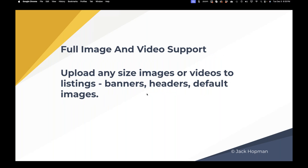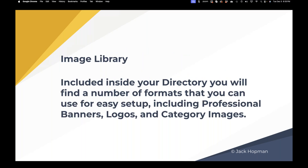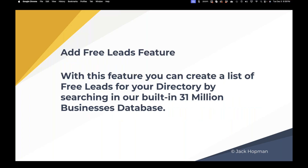Full image and video support: upload any image or video to your listing banners, headers, default images. In the library we have a library of images and you can select the image to your liking. If you're looking for another image, just contact support and we'll create that image for you and add it to the library. Add free leads feature: with this feature you can create a list of free leads for your directory by searching a database of 31 million businesses. If you want to tap into it, just select the niche and area and import those leads. It's very flexible.